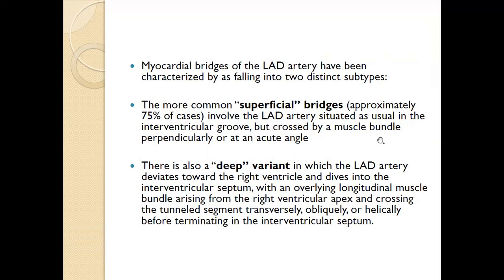Superficial bridging usually involves the LAD artery, situated in the interventricular groove, crossed by a muscle bundle either perpendicularly or at an acute angle. In the deep variant, the left anterior descending artery deviates towards the right ventricle, going inside the interventricular septum with an overlying longitudinal muscle bundle arising from the right ventricle apex, crossing the tunnel segment transversely, obliquely, or helically before terminating in the interventricular septum.